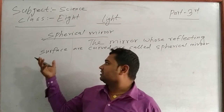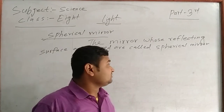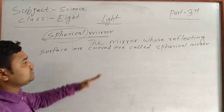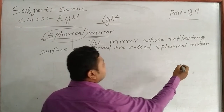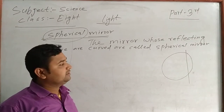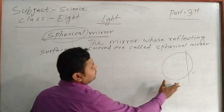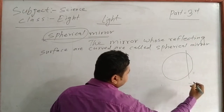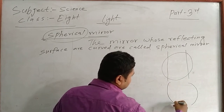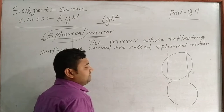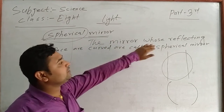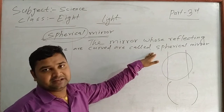Today we will look at the spherical mirror. So, what does spherical mean? A spherical mirror is a mirror whose reflecting surface is curved. It means it is kept on a sphere — here it's got the half parts. It forms a shape like a curve. The mirror whose reflecting surface is curved is called a spherical mirror.